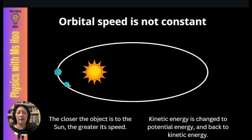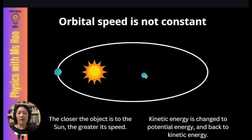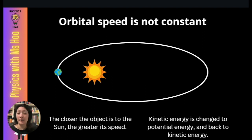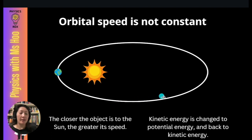A planet slows down as it moves further from the Sun, and speeds up as the Sun's gravitational force pulls it closer — it slingshots back to the other end of the orbit. This can be explained through conservation of energy. Kinetic energy is calculated as ½mv², where m is the mass of the moving object and v is its speed. When the planet slows down, kinetic energy decreases and is converted to potential energy, which is then converted back to kinetic energy as the planet speeds up again.